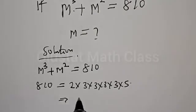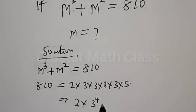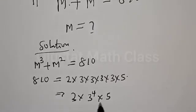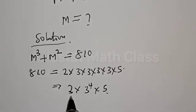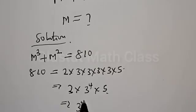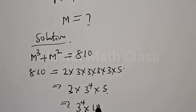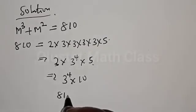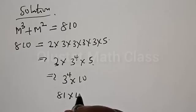Then we have 2 multiplied by 3 raised to the power of 4, multiplied by 5. Then we have 3 raised to the power of 4, and here is 2, here is 5. This implies that we have 3 raised to the power of 4, then 5 times 2, that is multiplied by 10. So 3 raised to the power of 4 is 81, multiplied by 10.